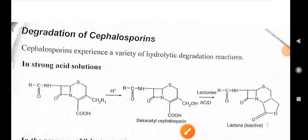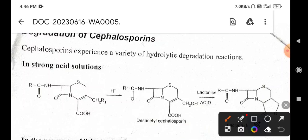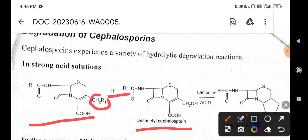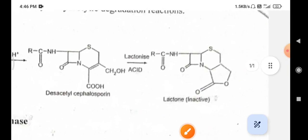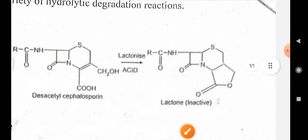Cephalosporins experience a variety of hydrolytic degradation reactions. In the strong acidic solution, cephalosporin is converted into desacetyl cephalosporin. Desacetyl refers to the removal of the acetyl group present at the third position of cephalosporin. The removal of this acetyl group gives desacetyl cephalosporin, which is further lactonized to produce an inactive lactone.